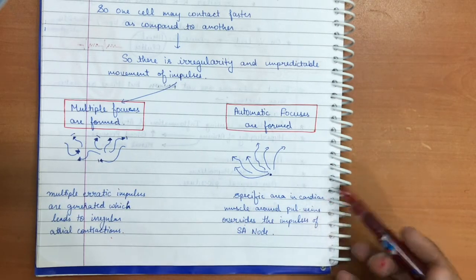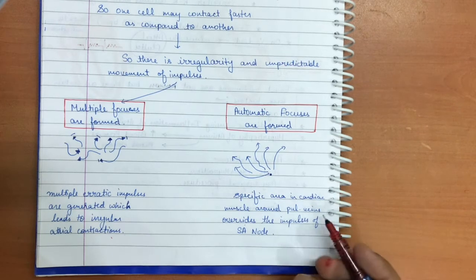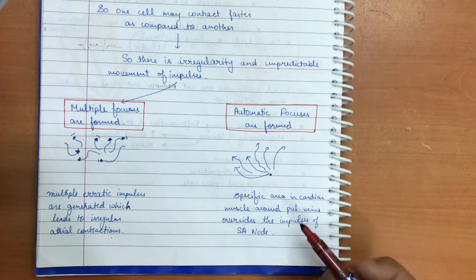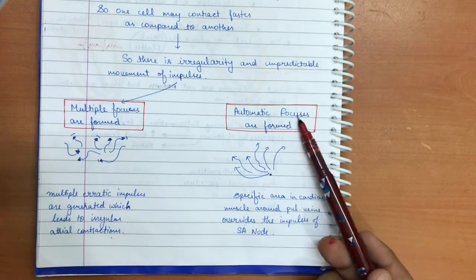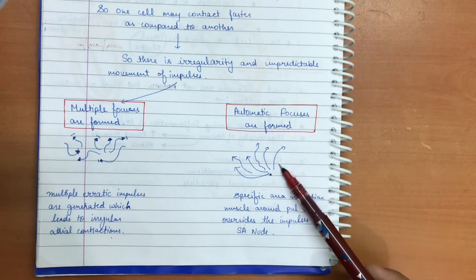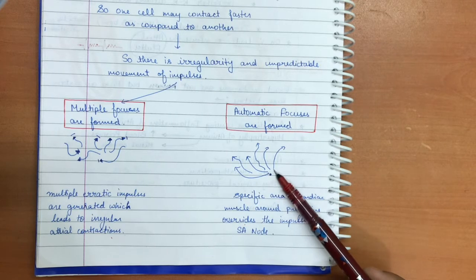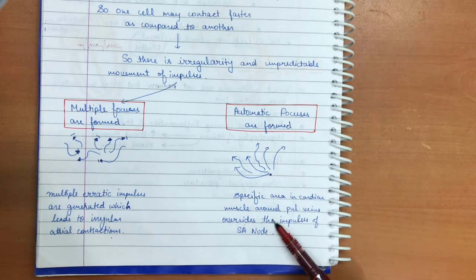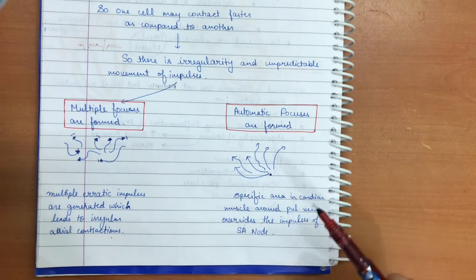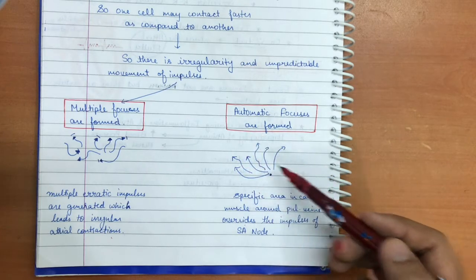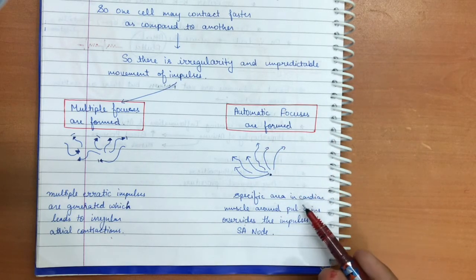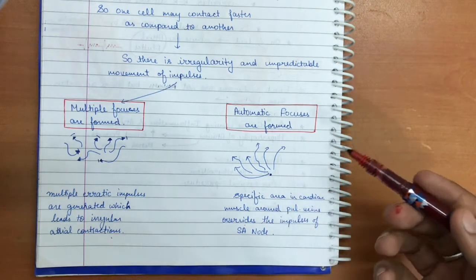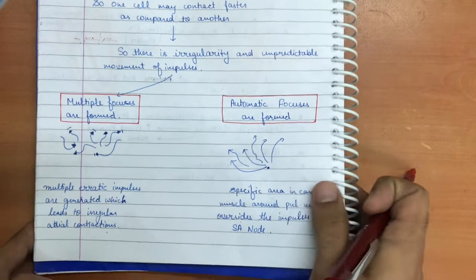Additionally, near the pulmonary veins there is a specific area in the cardiac muscle where automatic foci can form. These automatic foci override the impulses of the SA node, and this overriding of the SA node by foci near the pulmonary veins can also lead to atrial fibrillation.